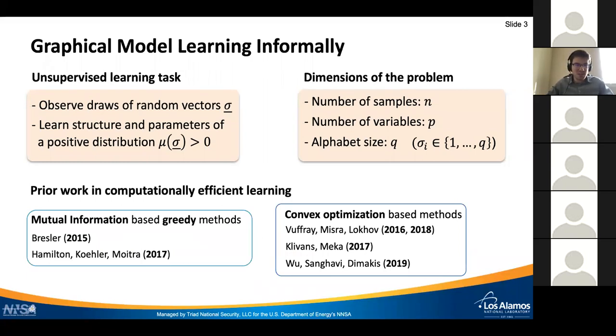I put here some notable prior work in computationally efficient learning of discrete graphical models, starting with the seminal paper by Guy on mutual information-based greedy methods that were later generalized by Hamilton and others for more general discrete graphical models. There is also a class of other methods based on convex optimization, in particular on conditional likelihood and interaction screening method.